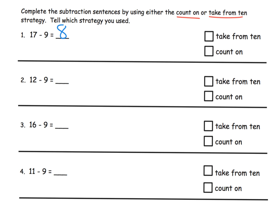In this case, let's do 17 minus 9. I'm gonna do the take from 10 strategy and I'm gonna say 17 is 7 and 10, then I'm gonna say 10 minus 9 is 1, and then 1 plus that original 7 gives us 8.